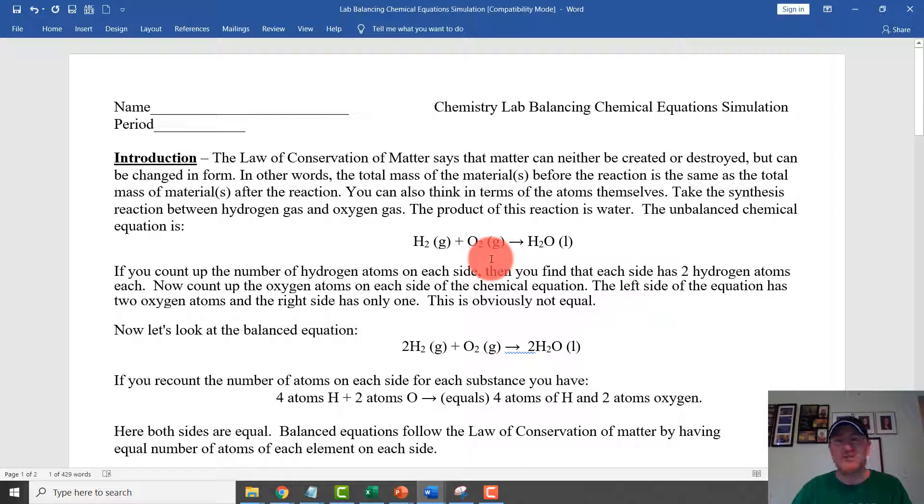So we need to rewrite the equation. And the only way we can rewrite and change equations is by changing the coefficient, which of course is the number that goes in front of any of the actual symbols or elements. If we rewrite the equation right here, we have the balanced equation. Now I have two hydrogens and one oxygen makes two waters.